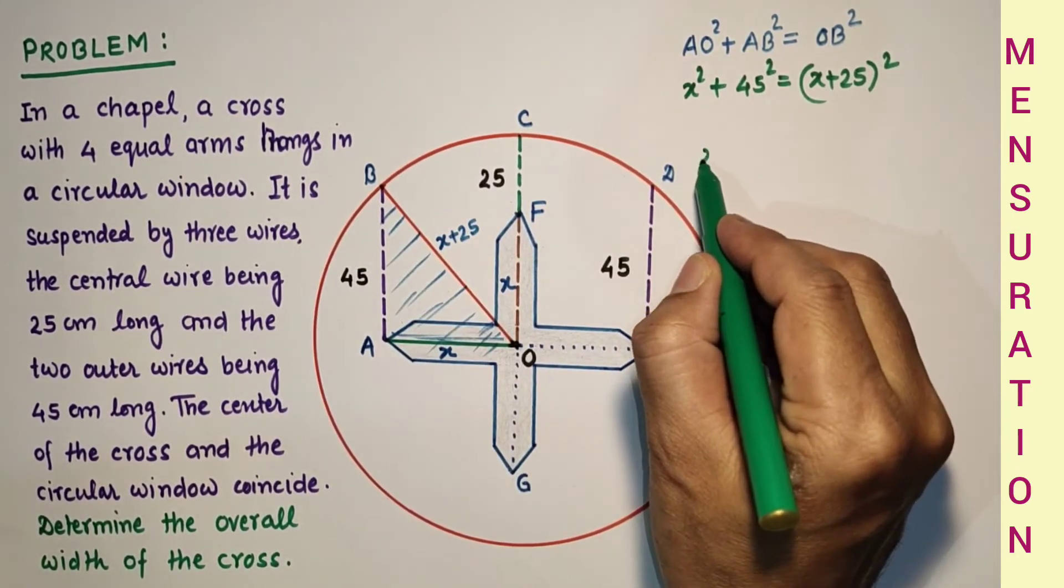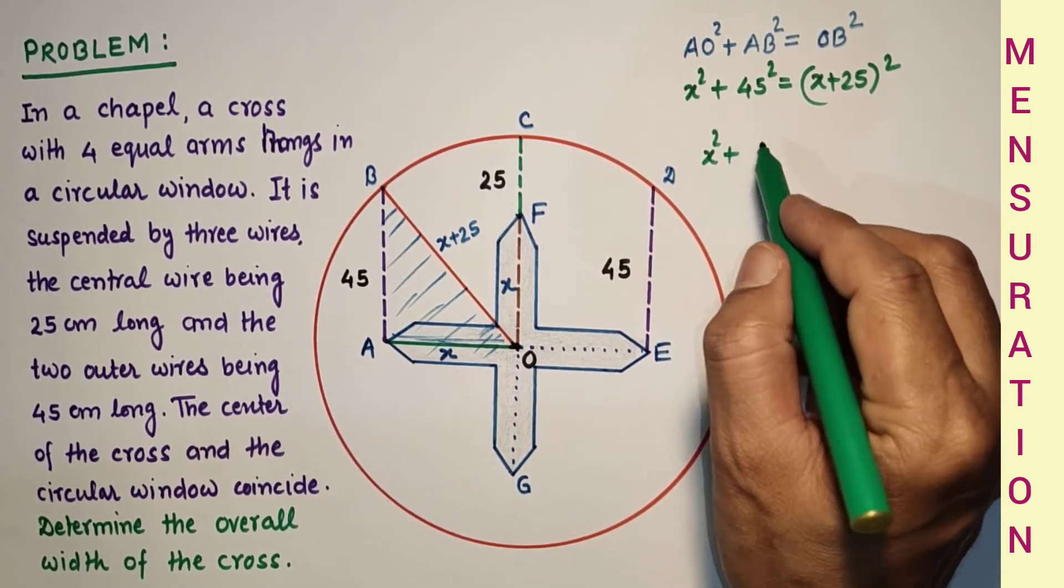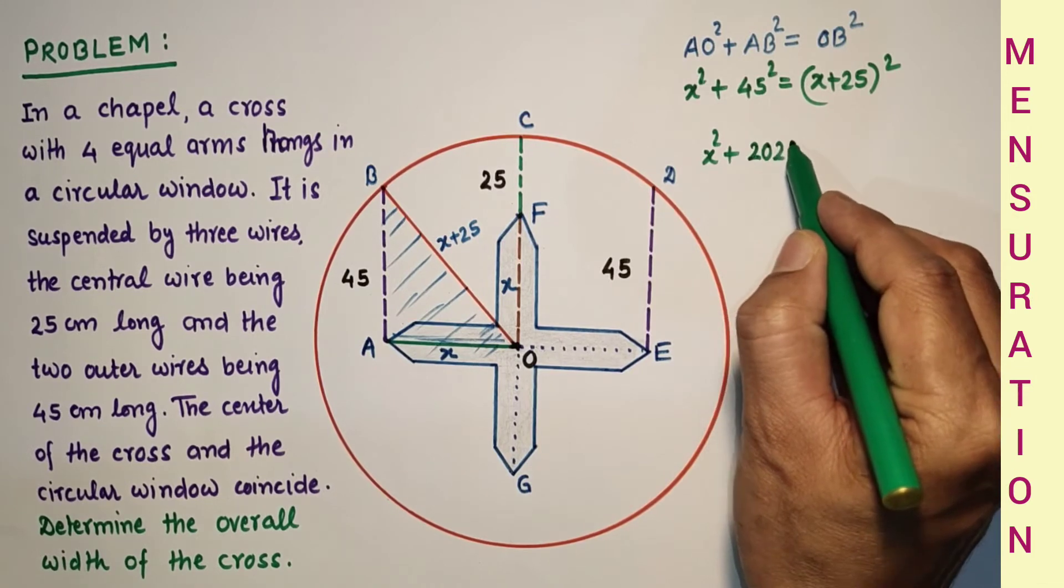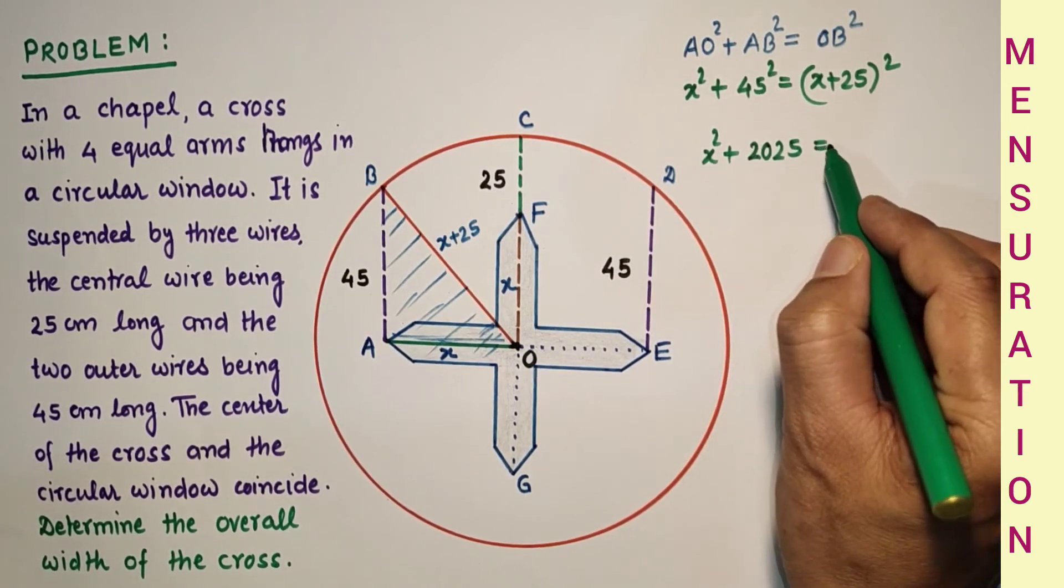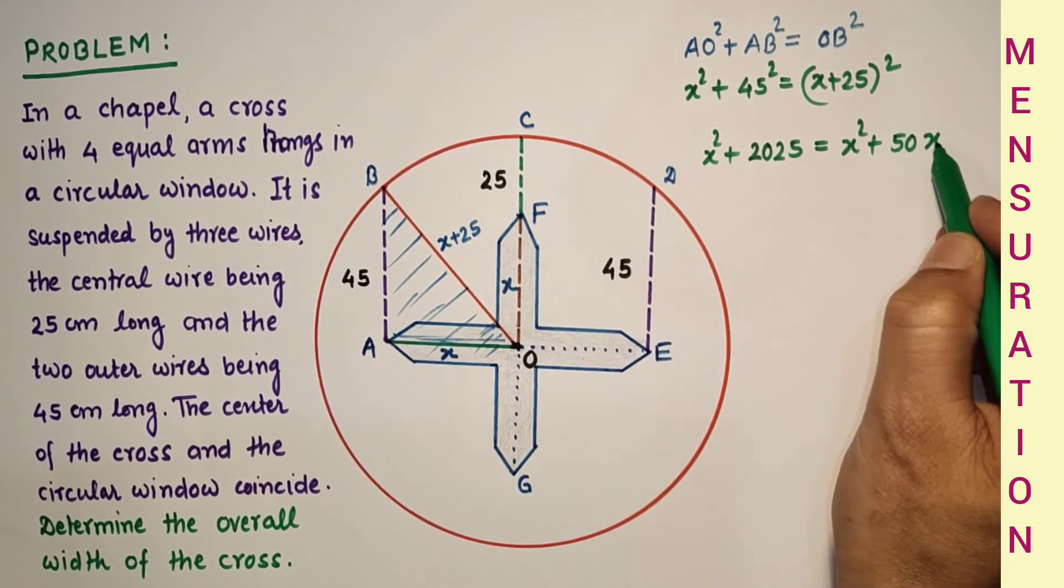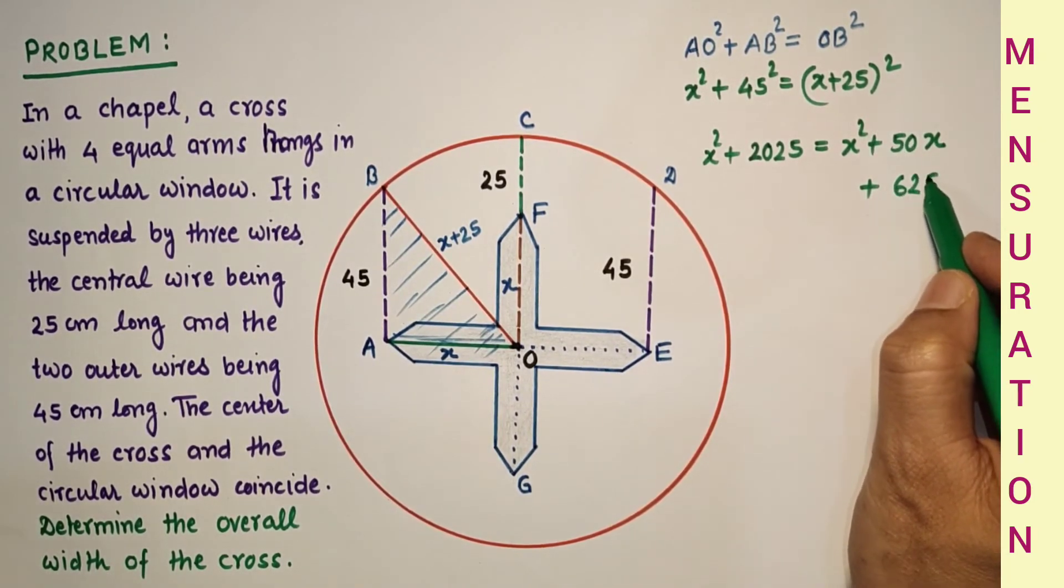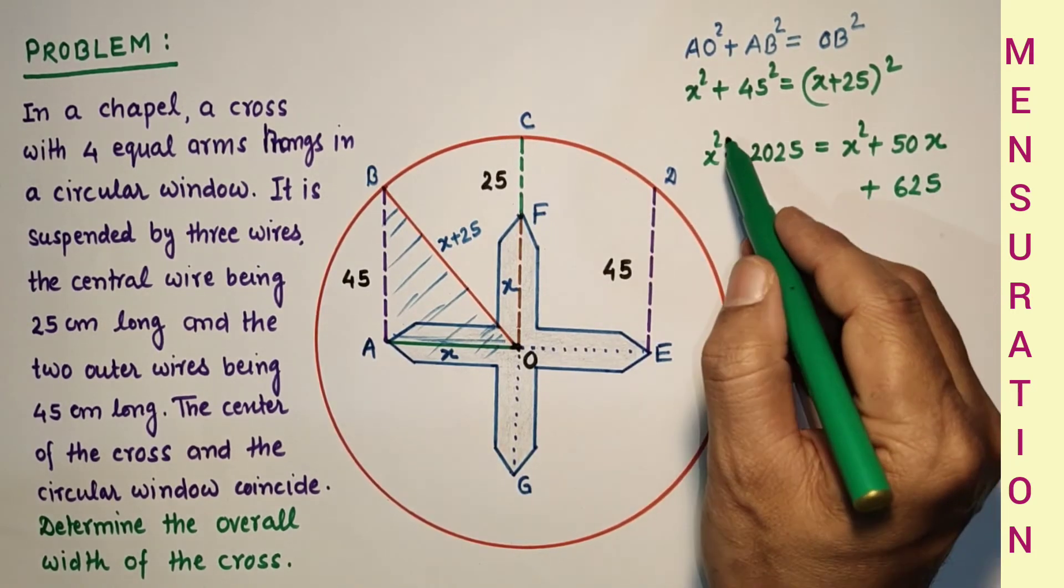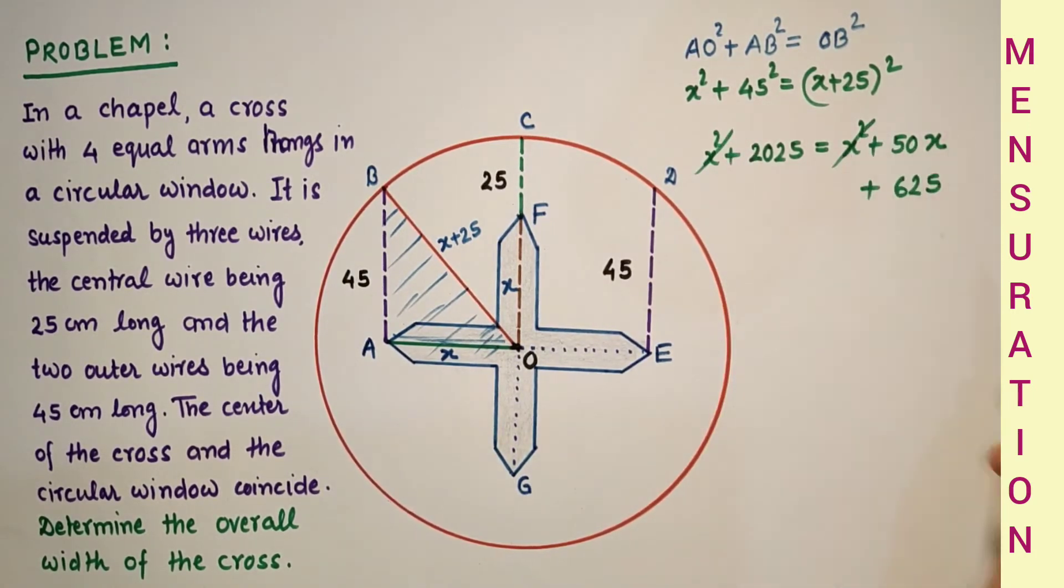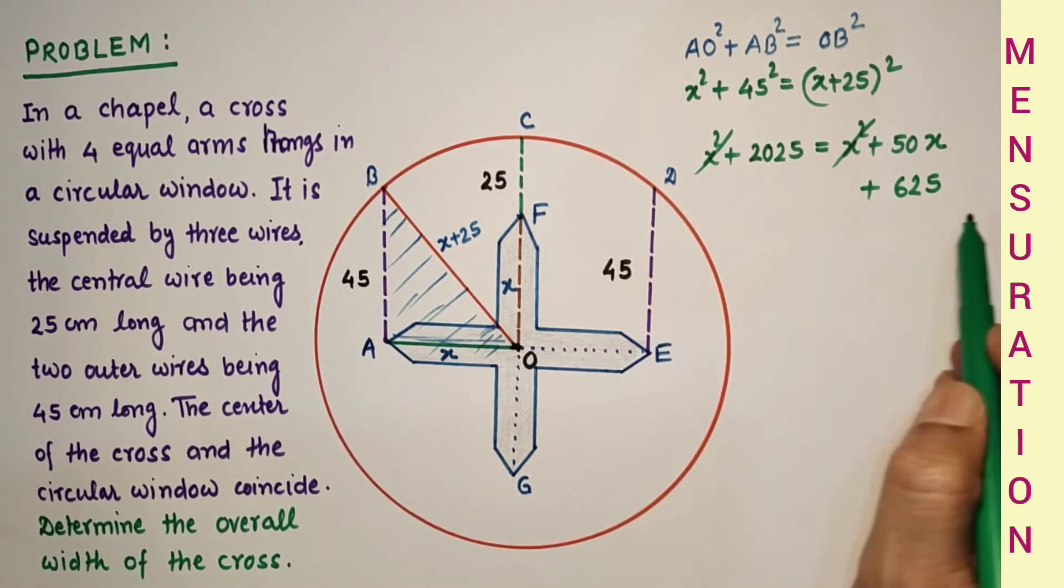Simplifying this, X square plus 45 square is 2025, which is equal to X square plus 50X plus 25 square is 625. From both the sides we can cancel out X square.